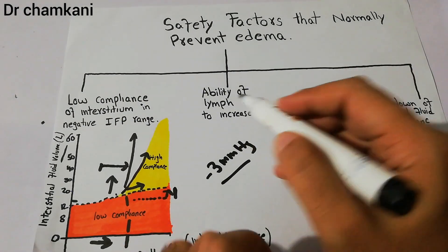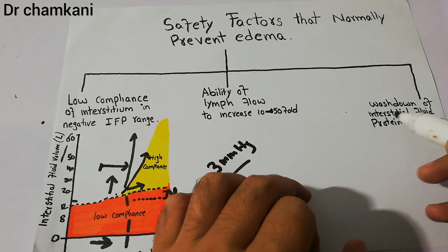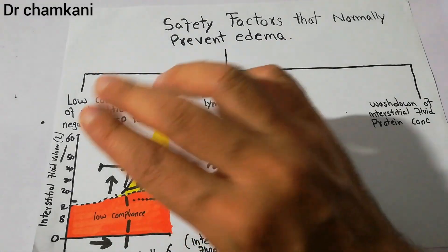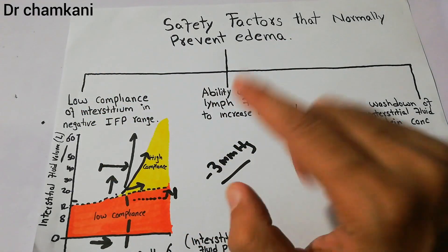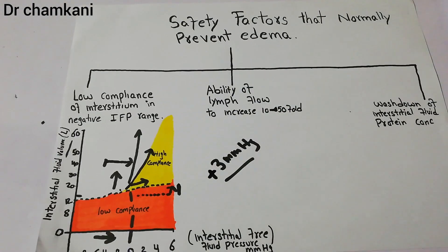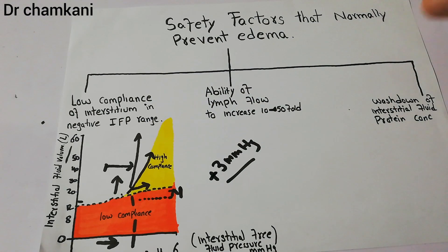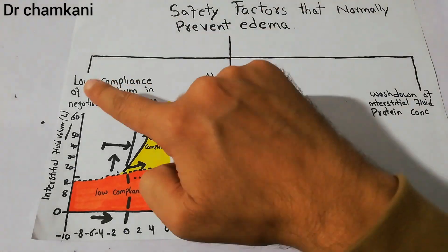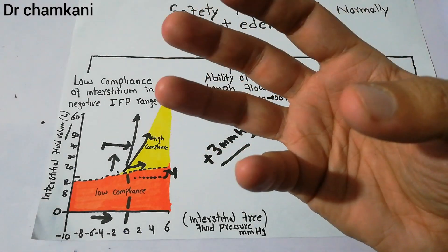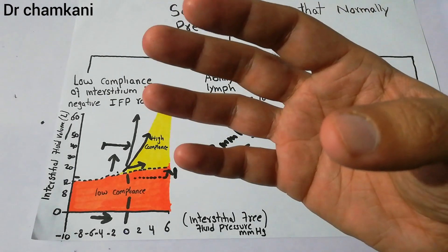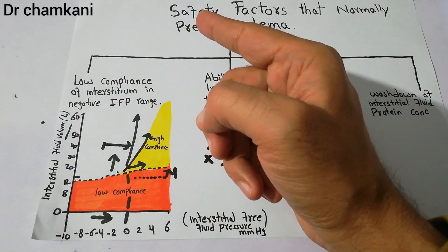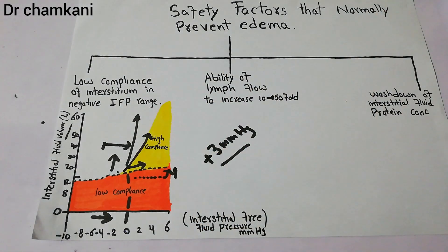When we discuss the other safety factors — the ability of lymph flow to increase and the washdown of interstitial fluid protein — we will see they also have quantifiable values. The value of the low compliance in the negative zone is around 3 mmHg. In the next lecture, we will discuss why the structure of the interstitium produces this low compliance, and then cover the remaining safety factors. Thanks for watching.